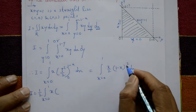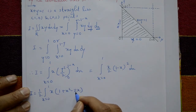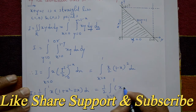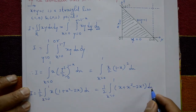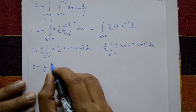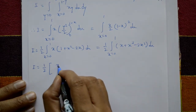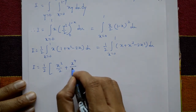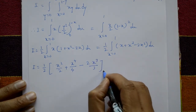Expand using (a minus b) squared: (1 minus x) squared equals 1 plus x squared minus 2x. Multiplying by x gives x plus x cubed minus 2x squared. So I equals 1/2 times the integral from 0 to 1 of (x plus x cubed minus 2x squared) dx. Integrating: x squared over 2 plus x to the 4 over 4 minus 2 times x cubed over 3, with limits 0 to 1.